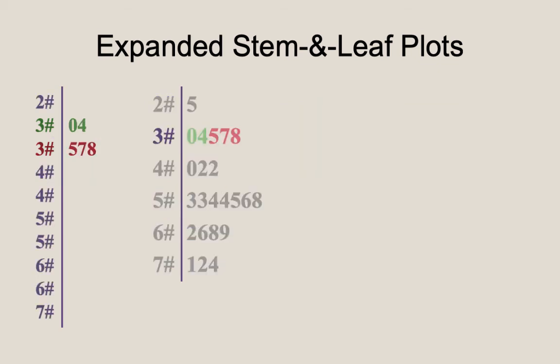We see here that the digits 0 and 4 for 30 and 34 are recorded in the first row, and 5, 7, and 8 for 35, 37, and 38 are recorded in the second row. Here is the complete expanded stem-and-leaf plot.